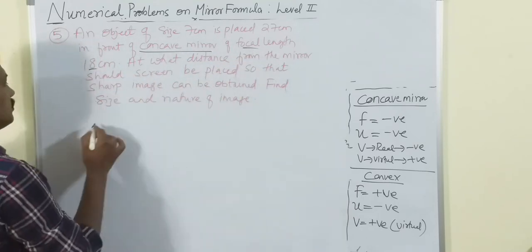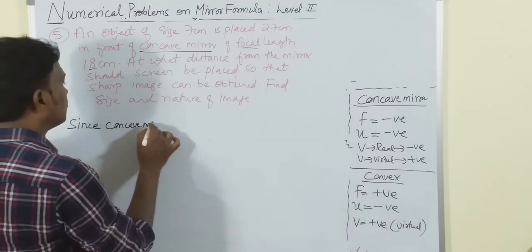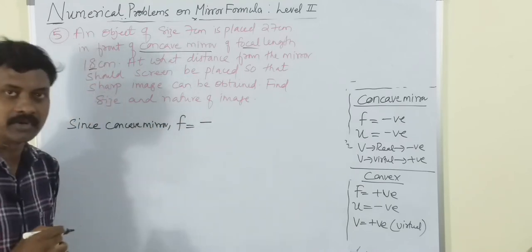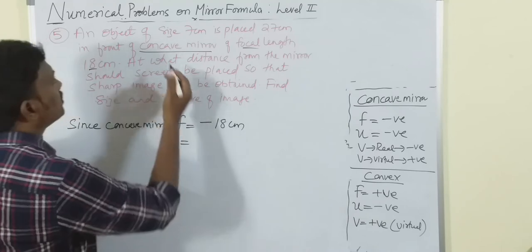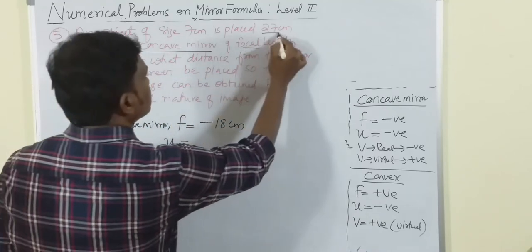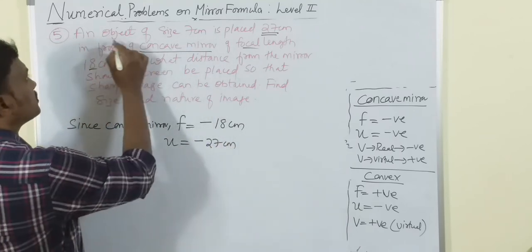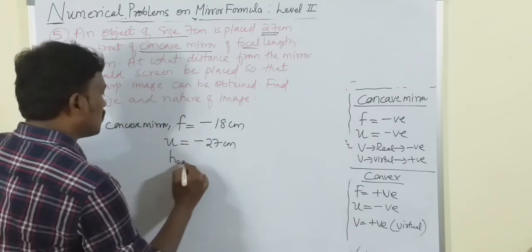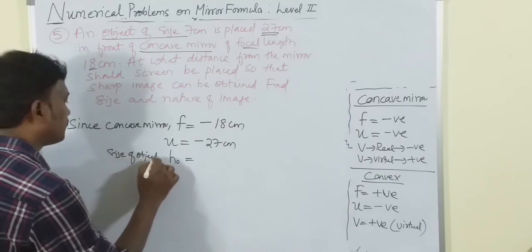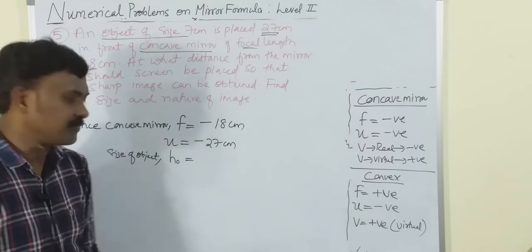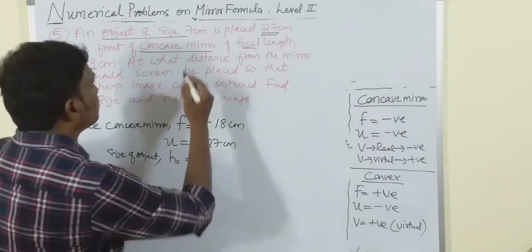It is a concave mirror, so f is negative: f = -18 centimeters. Object distance u = -27 centimeters. Object size h_o = 7 centimeters is given. We need to find the size of image h_i.